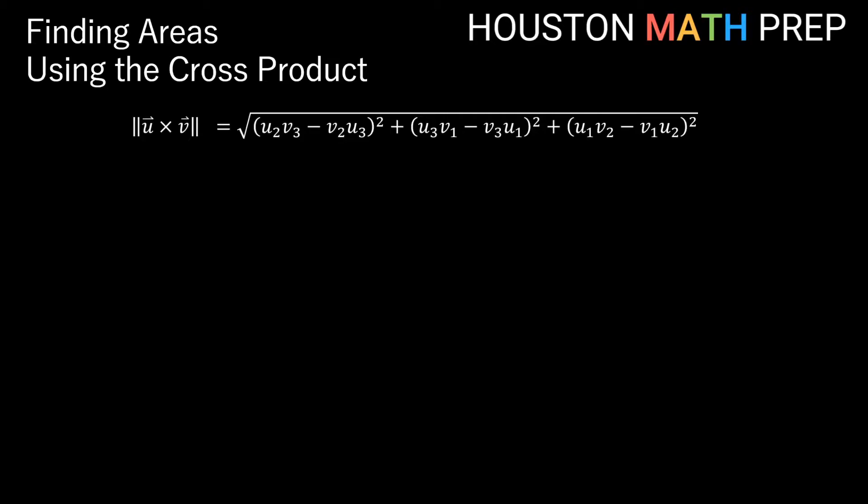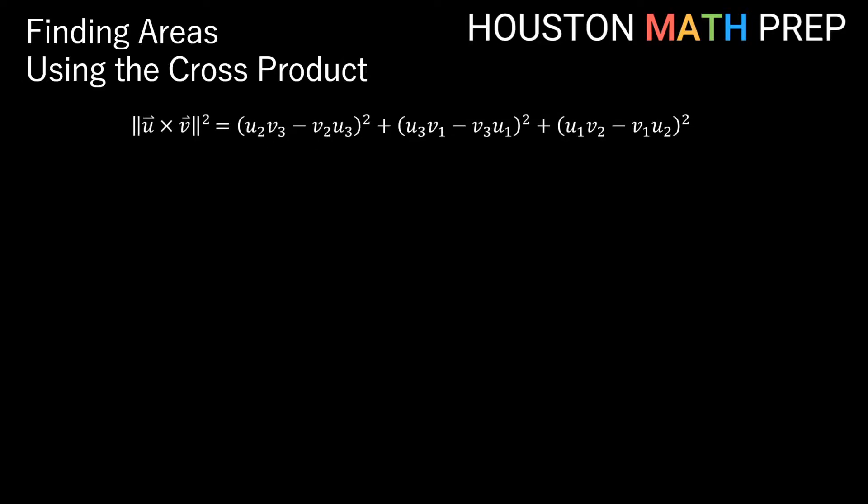Based on our formula for the cross product, we know that the magnitude of u cross v would be the square of each component added up, and then we would take the square root of it all. This isn't a formula we need to have memorized — as long as we get the process of finding a determinant, like we did in our cross product intro video. So we're going to take a brief journey here. You may want to put your pencil down just for the next minute or so, but just bear with us. Taking a brief journey using this magnitude — I promise it'll pay off for us in the long run.